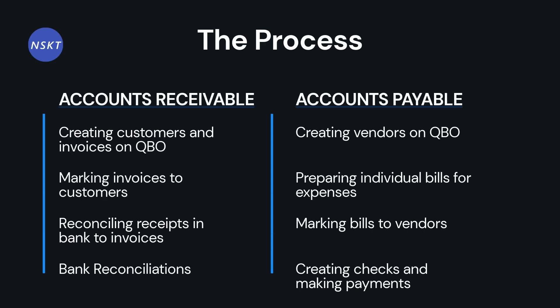As for accounts payable, our team begins with creating a vendor master on QuickBooks. Each expense bill is accounted for individually and, like the receivables process, the bills are marked to specific vendors. The final stage is to create checks and perform payments on the due date as per credit terms.